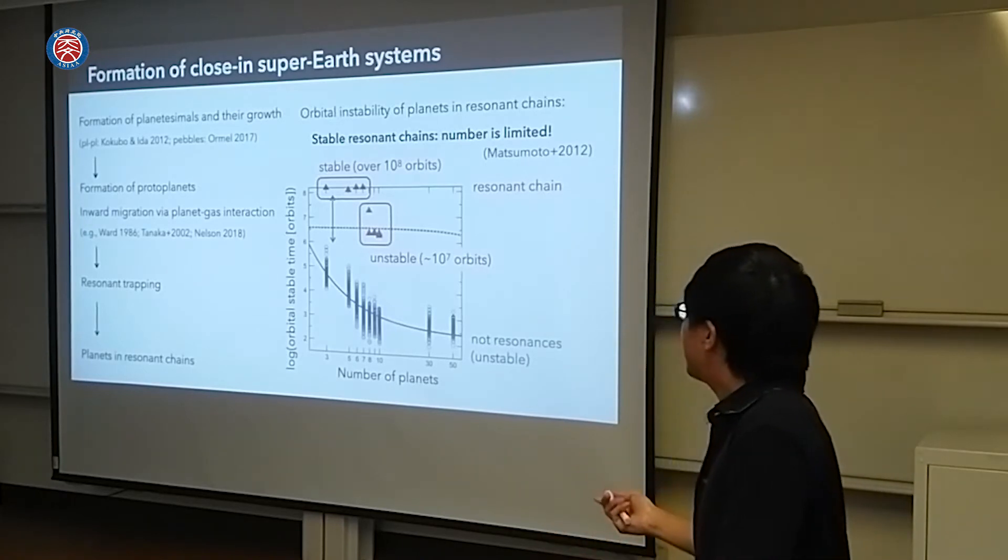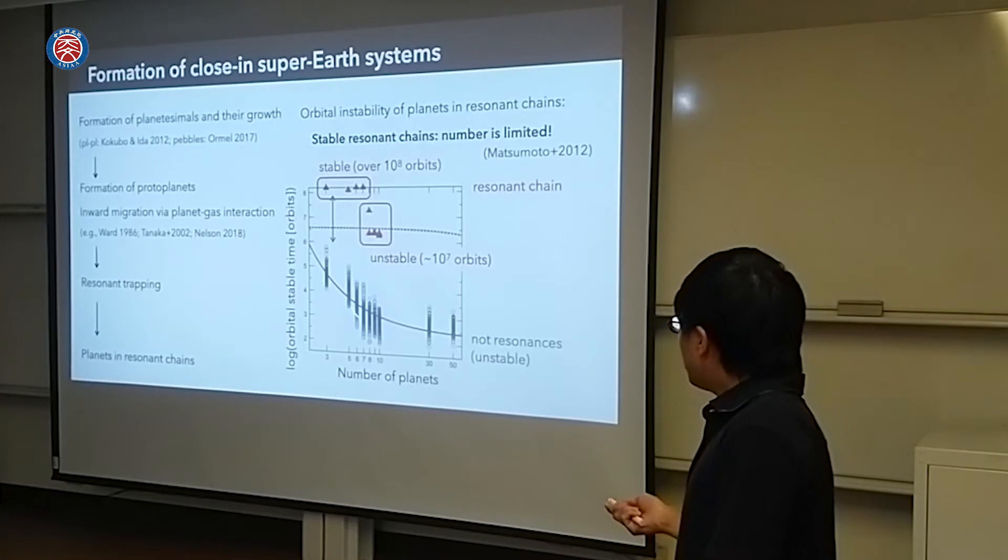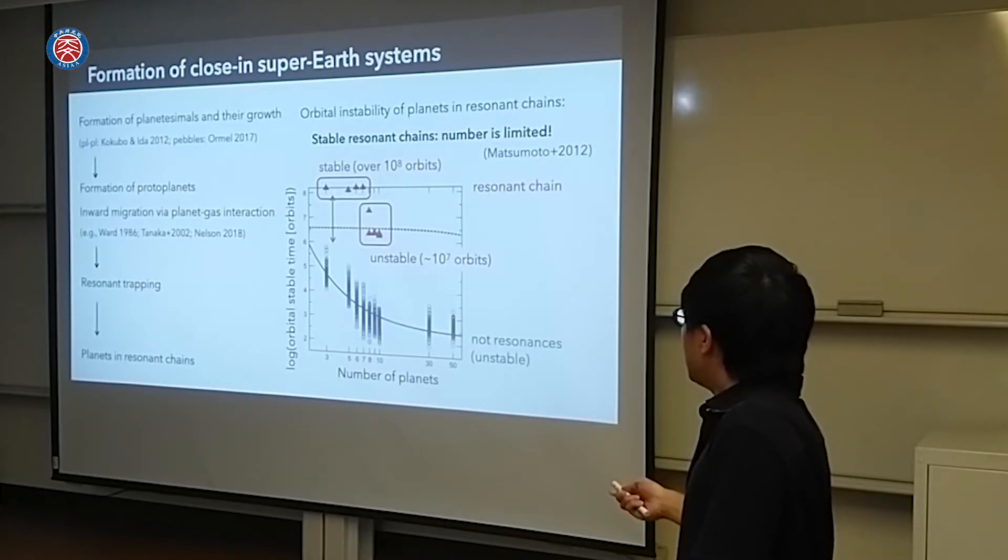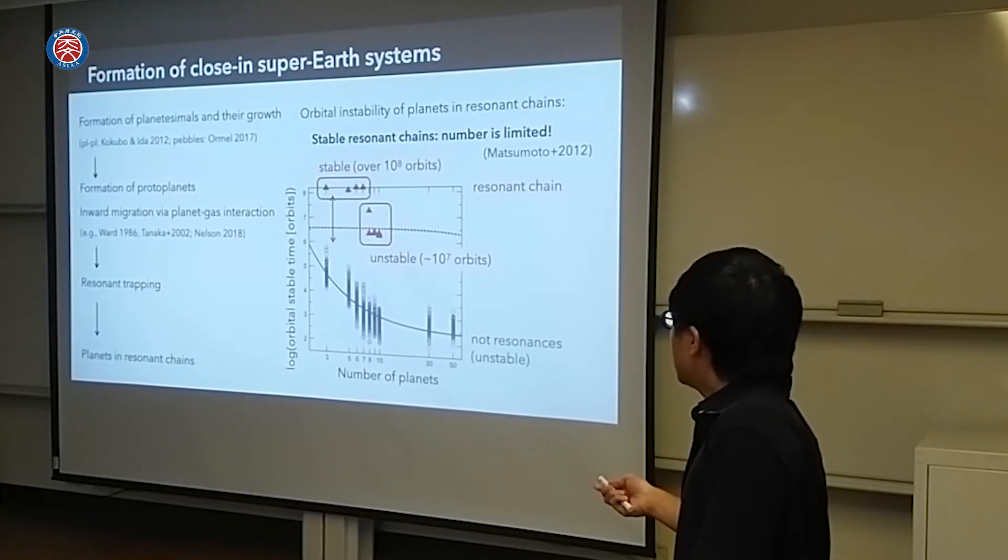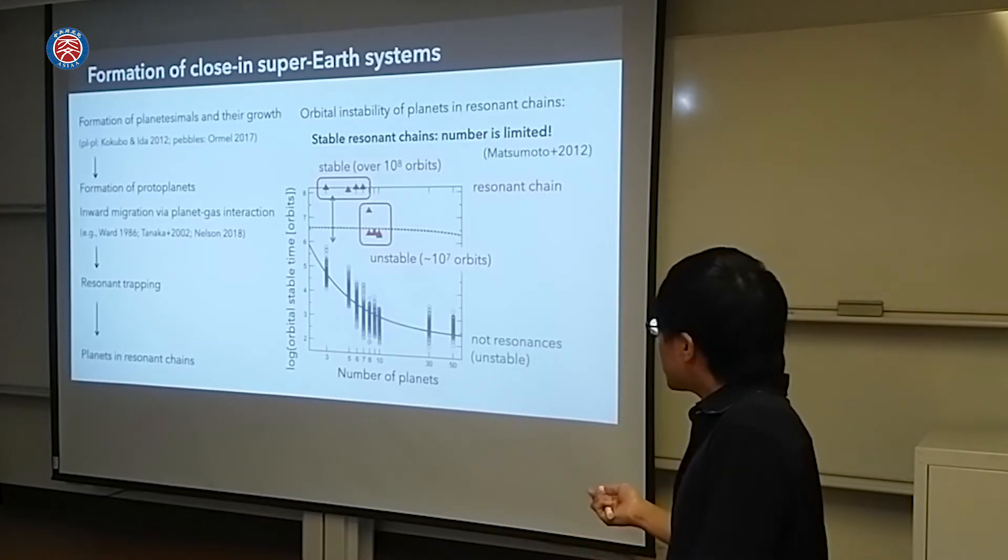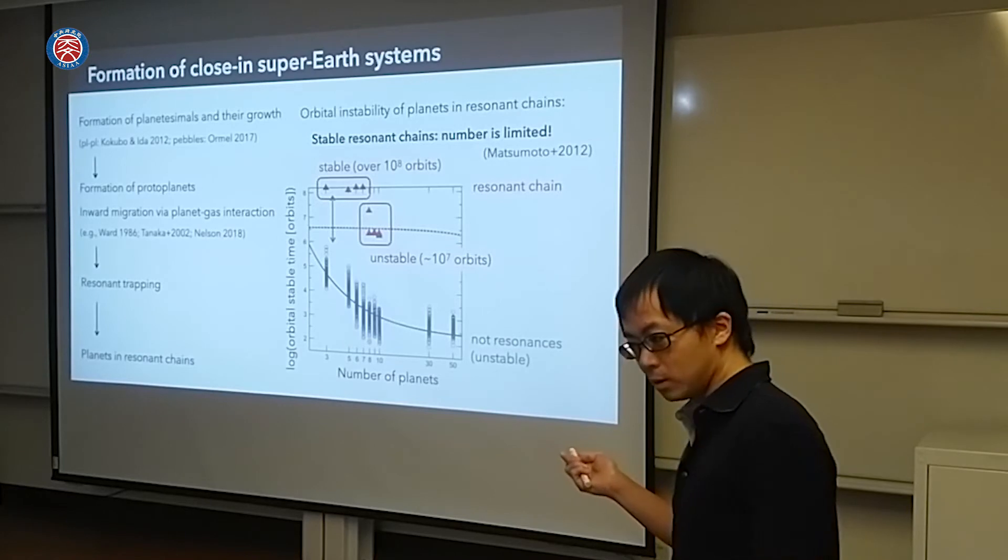Actually this is my past work from the 1920s, but there is a limitation of the stable resonances. I formed resonant planets by slow migration. This figure shows the orbital stable time, shown as a function of number of planets. I can see some critical value to stay the same. I found the limitation of planets stable in resonances.